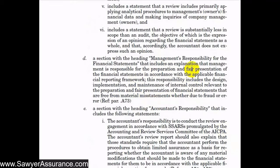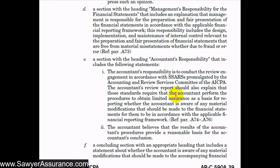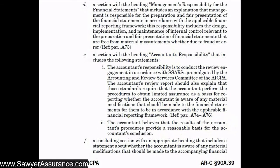Next, our review report needs a paragraph with the heading 'Management's Responsibility for the Financial Statements,' explaining that management is responsible for the preparation and fair presentation of the financial statements and for the design, implementation, and maintenance of internal controls. After that, we include a section titled 'Accountants' Responsibility,' stating that our responsibility is to conduct the review in accordance with SSARs, that we perform procedures to obtain limited assurance as a basis for reporting whether we're aware of any material modifications that should be made, and that we believe the results of our procedures provide a reasonable basis for our conclusion.